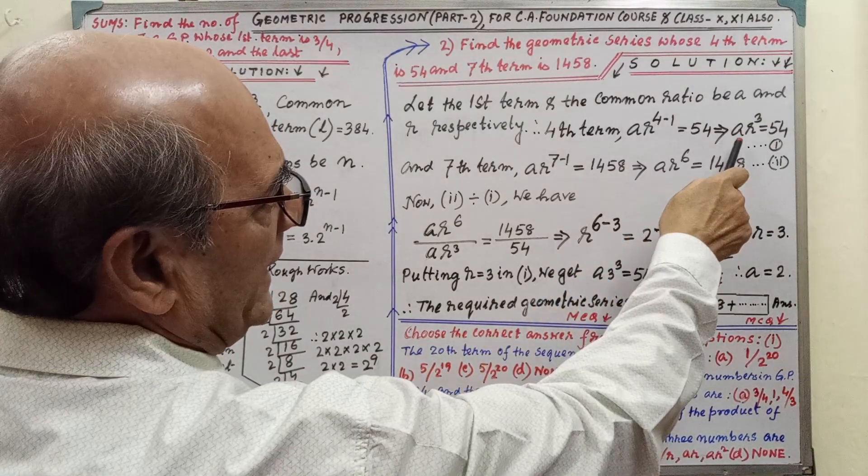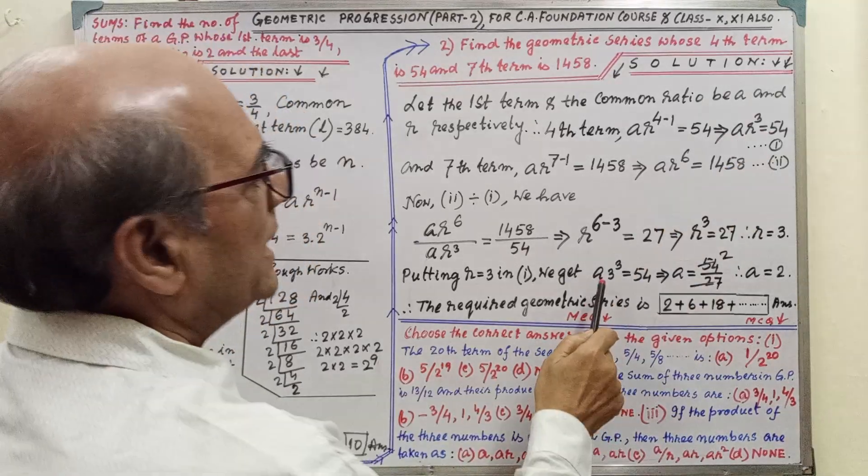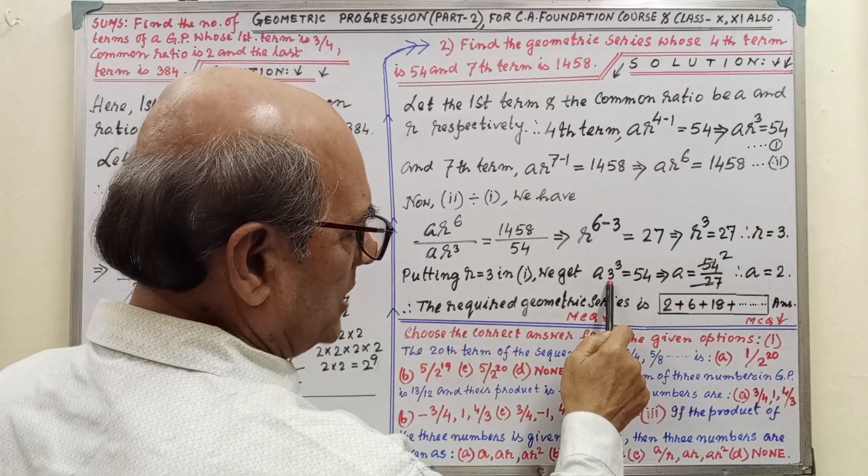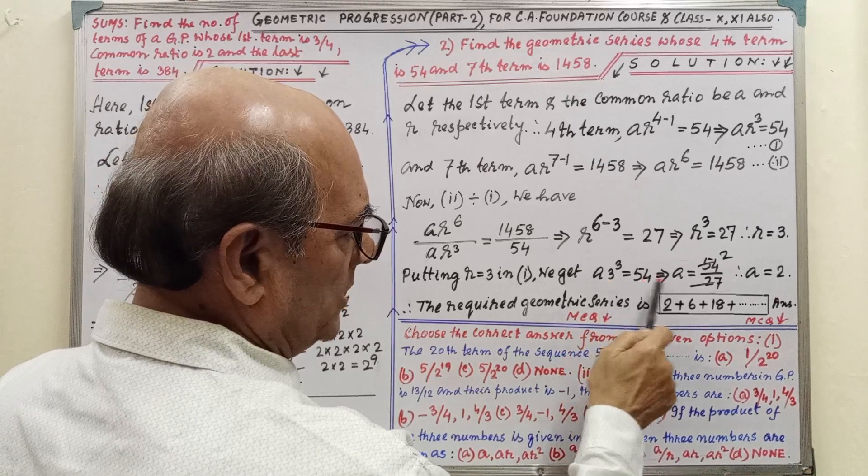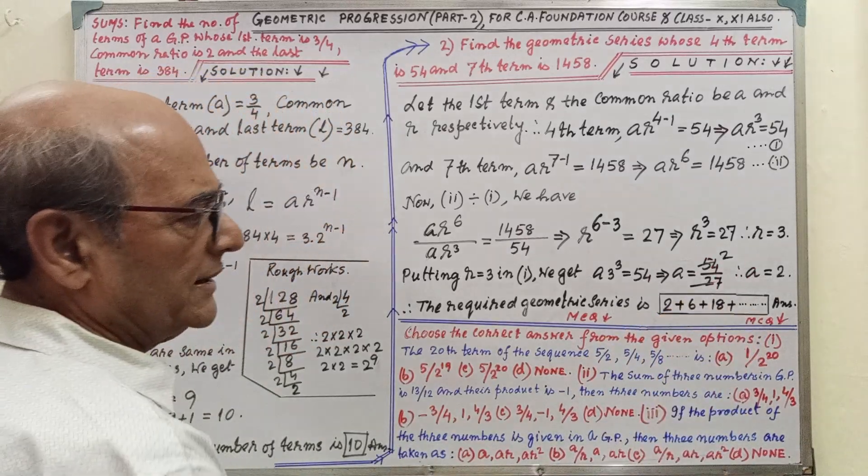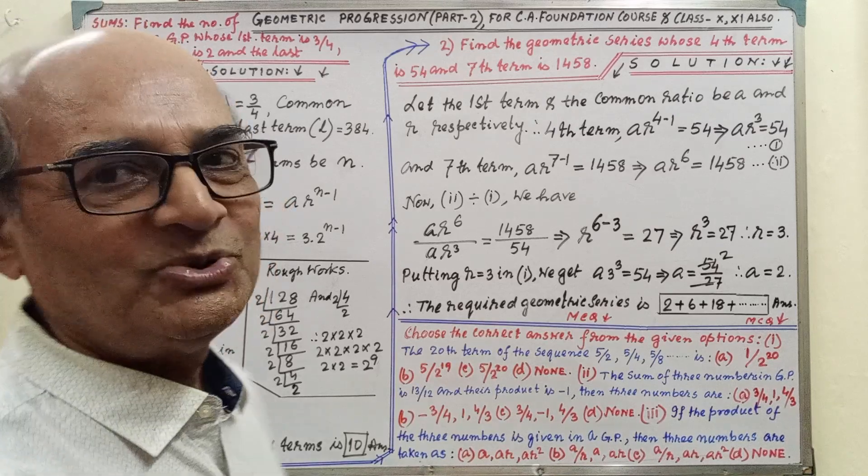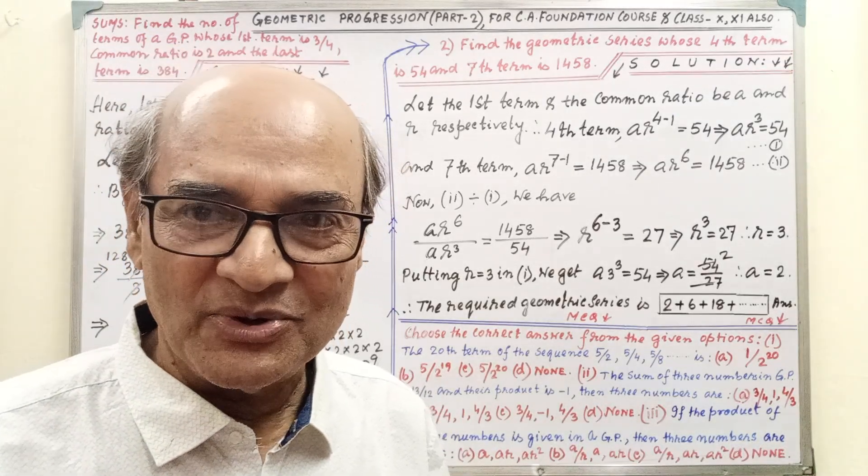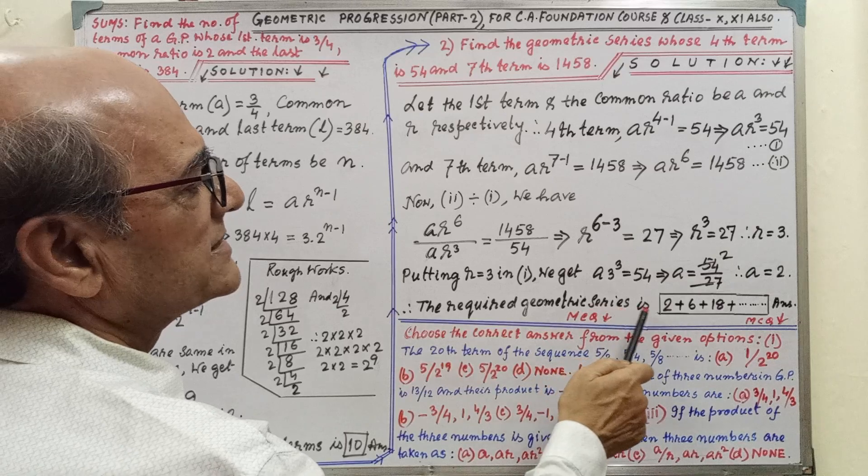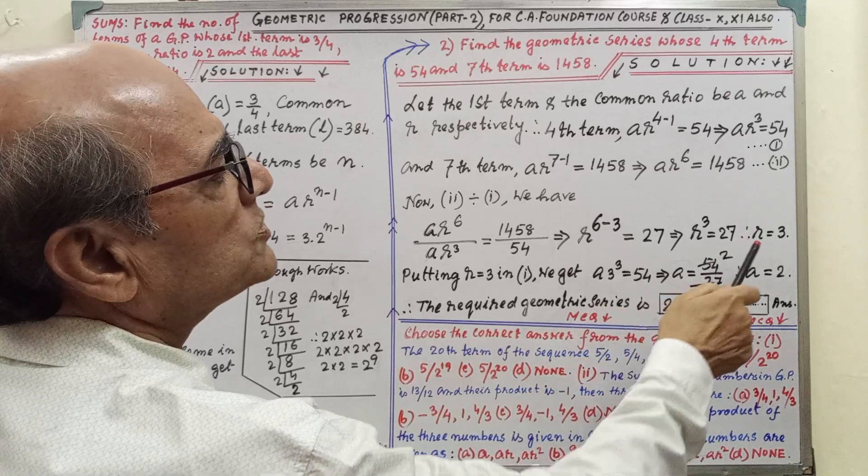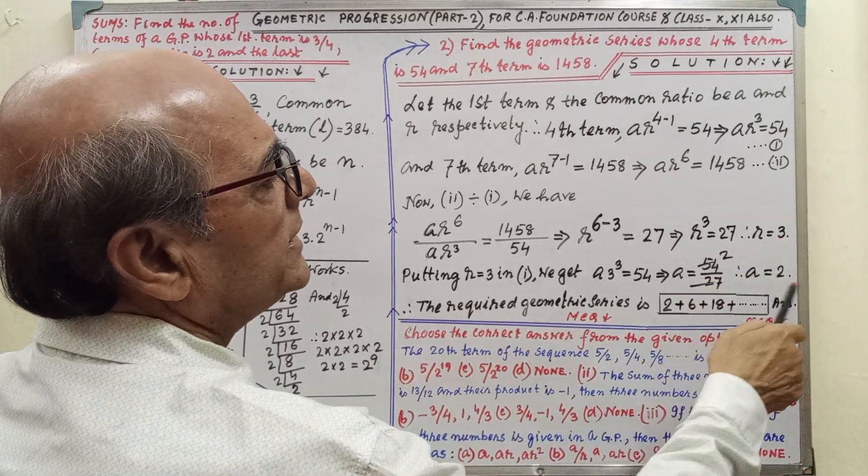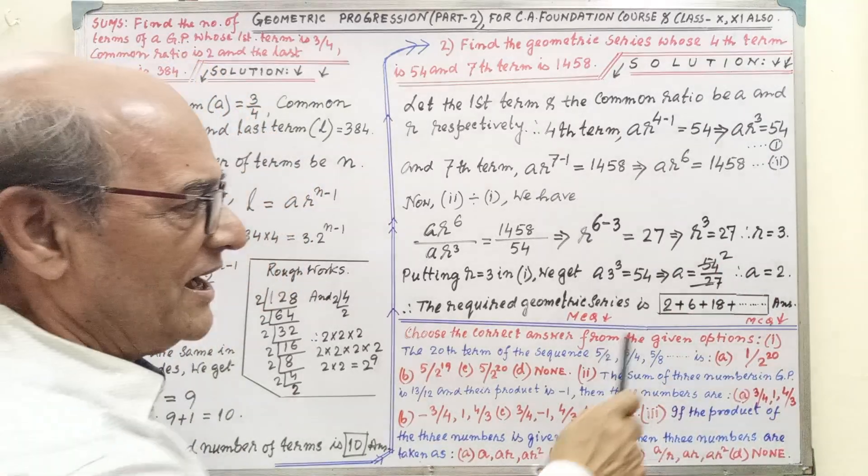Now putting R = 3 in equation 1, that is A·R^3 = 54. In place of R we are putting 3, so A·3^3 = 54. A·27 = 54, 3 cube means 27. Then 54/27, by solving we are getting A = 2. Now we are getting the first term and common ratio, so easily we will get the geometric series. That is the required geometric series: first term 2 and common ratio 3. That is 2, 2×3 = 6, 6×3 = 18, 18×3, and so on. In this way we are getting the geometric series. This is the answer. I think this is also clear to you.